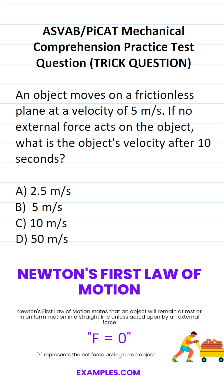This mechanical comprehension practice test question for the ASVAB and PyCat says, an object moves on a frictionless plane at a velocity of 5 meters a second. If no external force acts on the object, what is the object's velocity after 10 seconds?